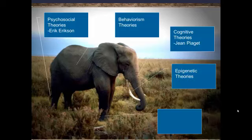Then there's epigenetic theories, and there'll be a lecture shortly on epigenetic theories — the idea of how our genes influence who we are and interact with the environment. There are also sociocultural theories that talk about how our culture and our social environments can impact who we are, and even a few more that the book covers.